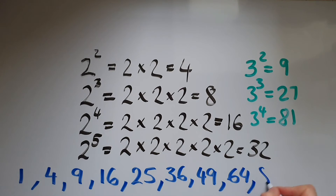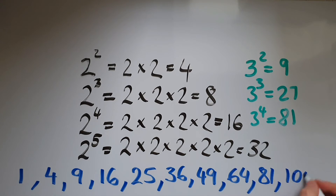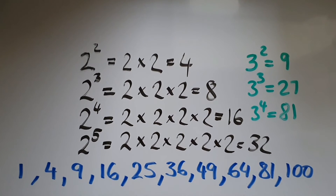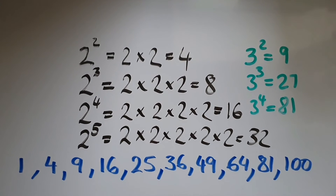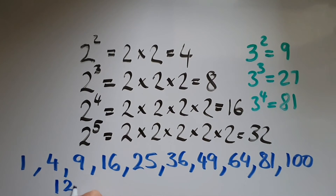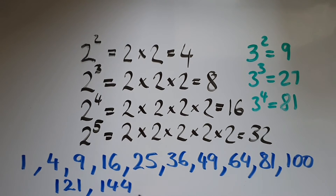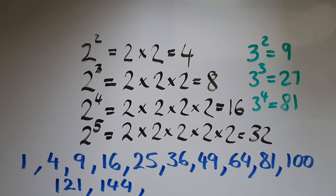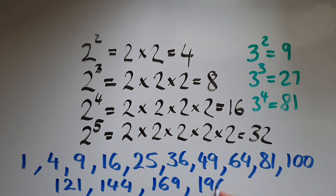9 squared is 81. 10 squared is 100. 11 squared is 121. 12 squared is 144. 13 squared is 169. 14 squared is 196. And 15 squared is 225.